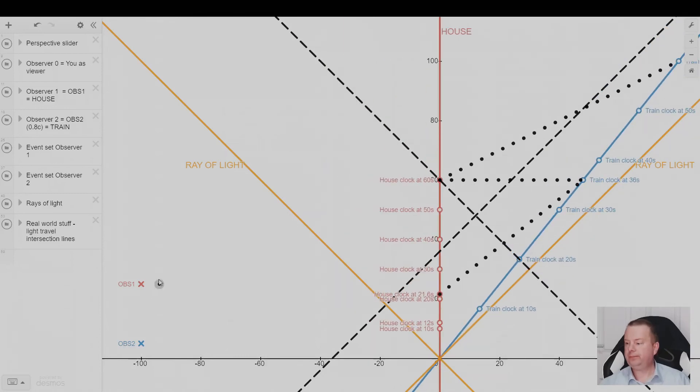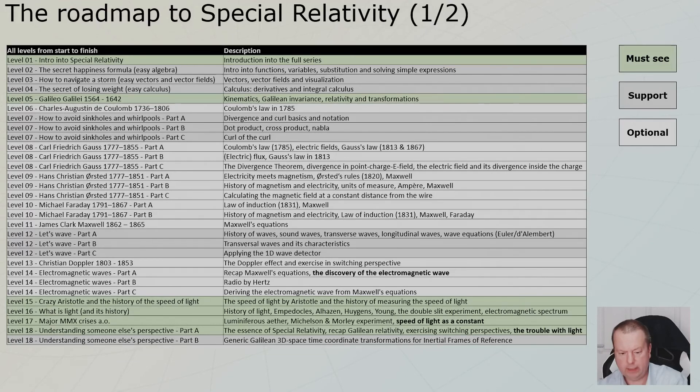So this is how it's done in the space time diagram. So let me see, I need to go to the other window. Yeah, this is it. This is it. I go back to this.